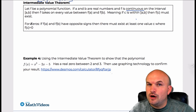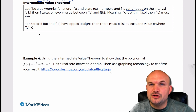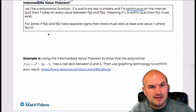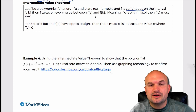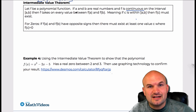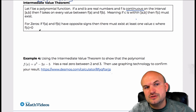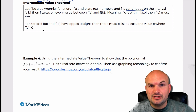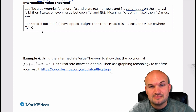Where the Intermediate Value Theorem is really going to be helpful for us is in determining if a zero exists for a polynomial. Here's the general definition for the Intermediate Value Theorem for any kind of function on any interval — we'll use it to basically determine if a zero exists.